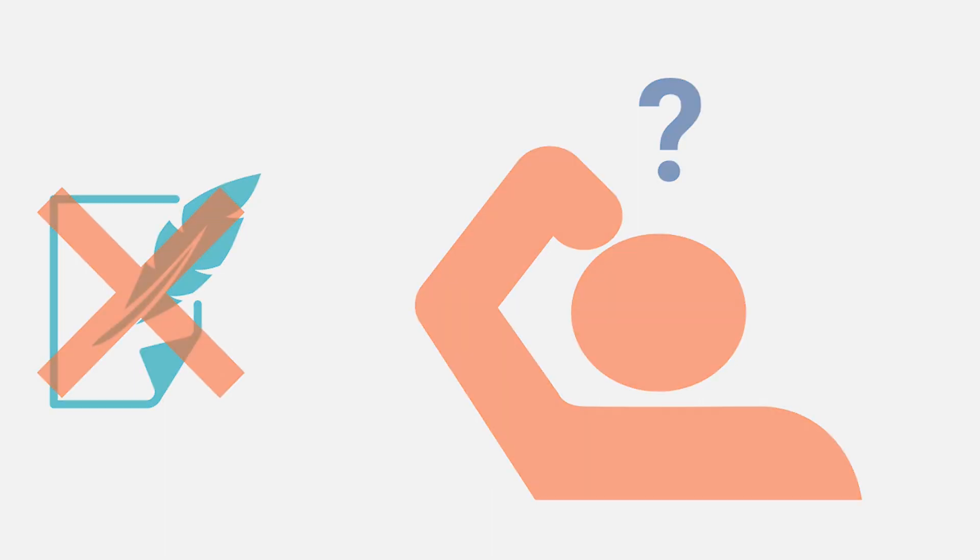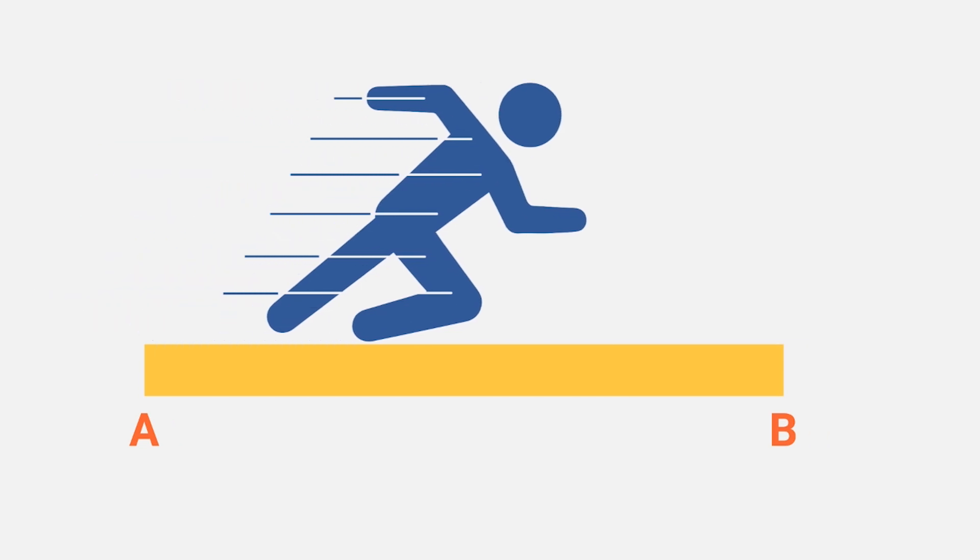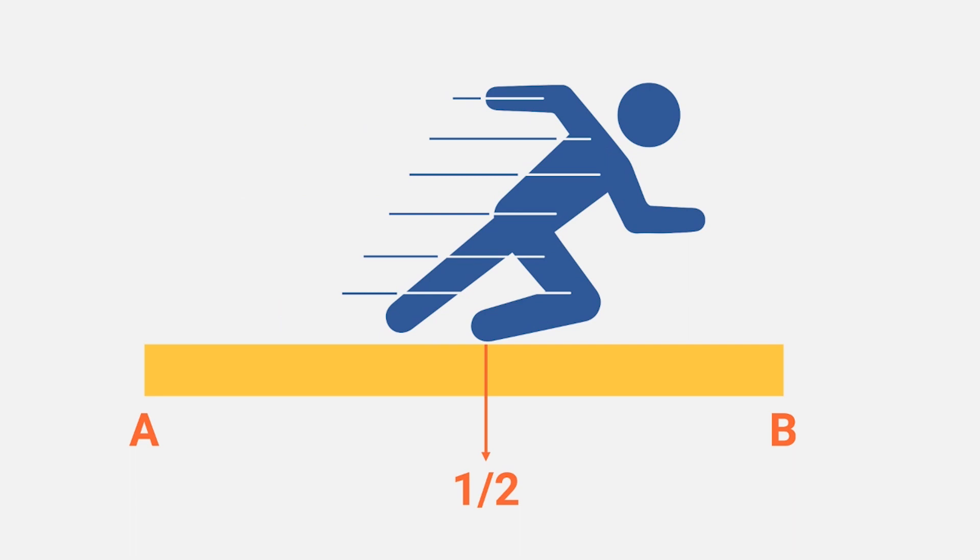Let's look at the first one. A runner tries to run from point A to point B. So he starts running and running, and then he reaches the halfway point between point A and B. So far so good. I mean, you always have to reach the halfway point before you reach your final destination.